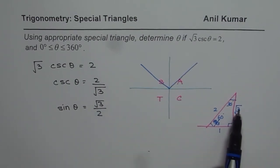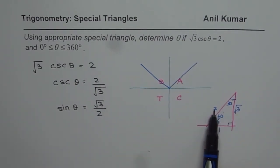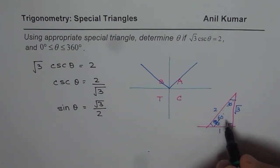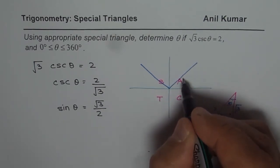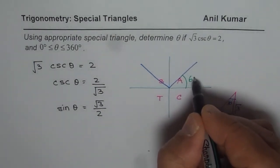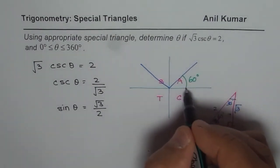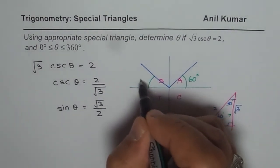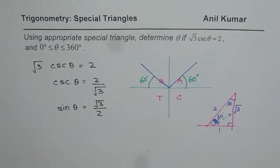When we say sin θ = √3/2, then √3 is the opposite side and the hypotenuse is 2. So the angle opposite is 60 degrees. Therefore, our acute angle here is 60 degrees, and since the acute angle is 60, it is also 60 degrees here.